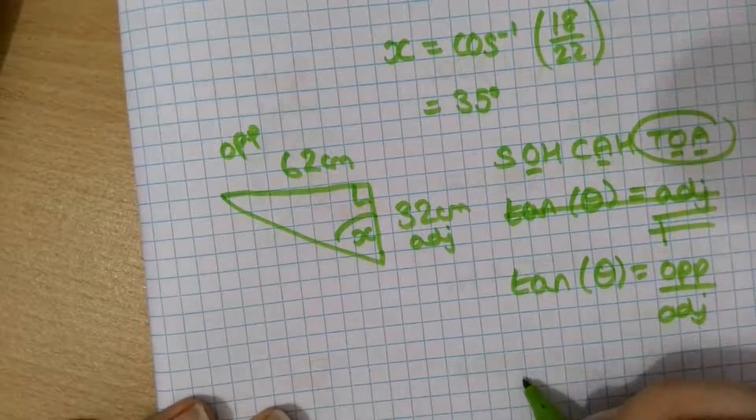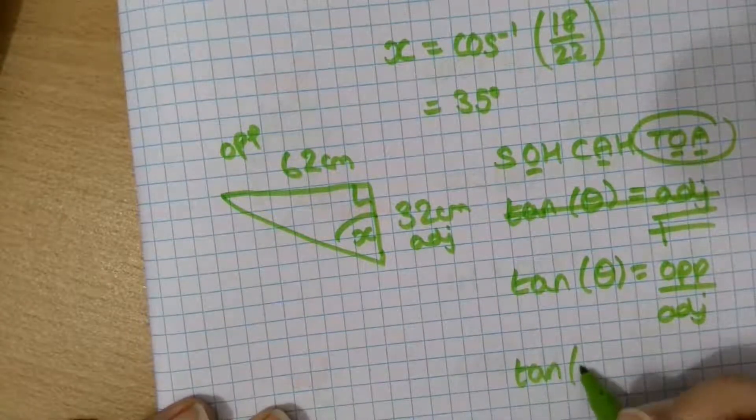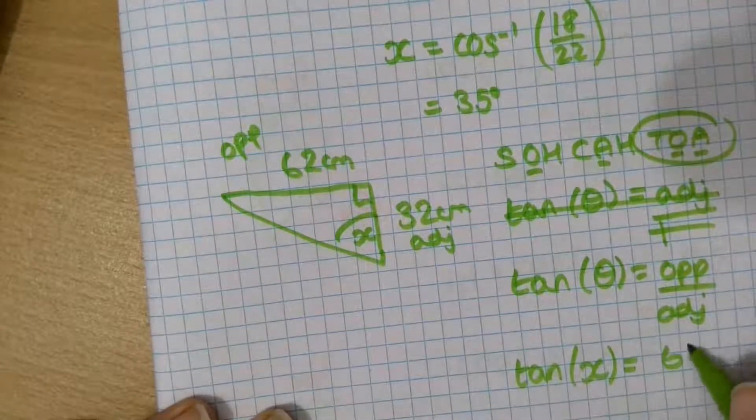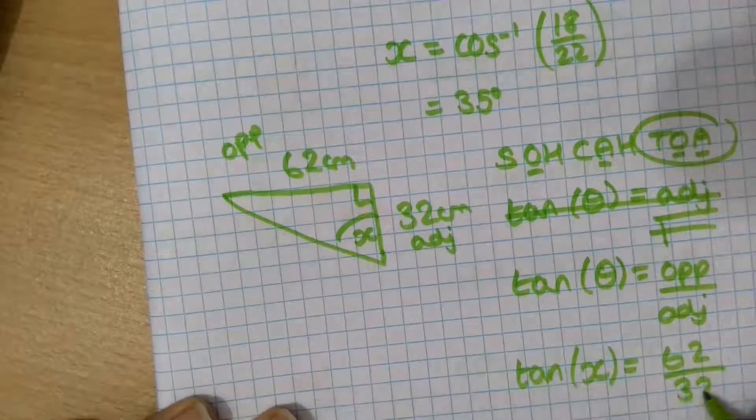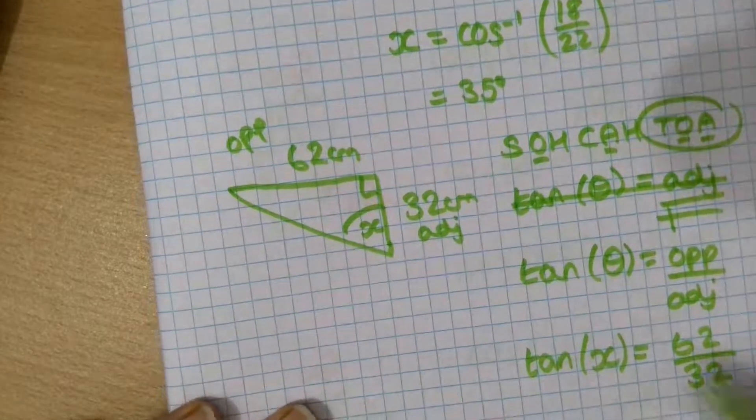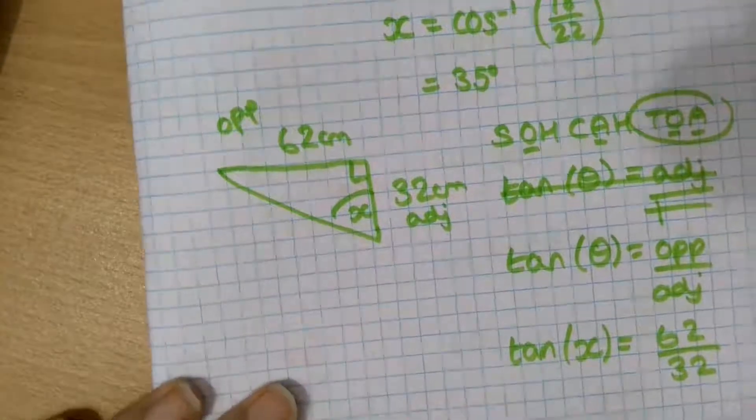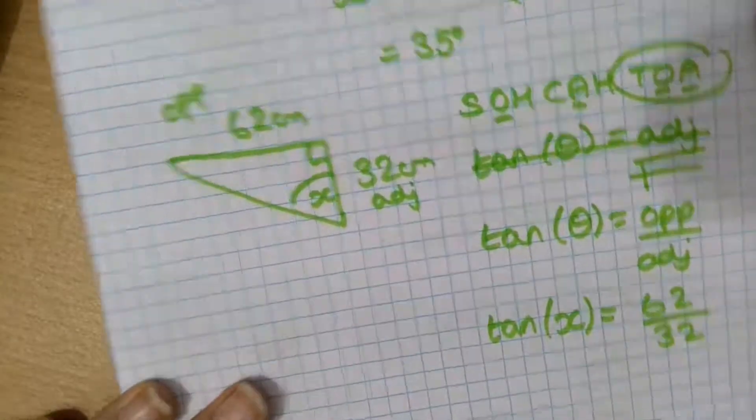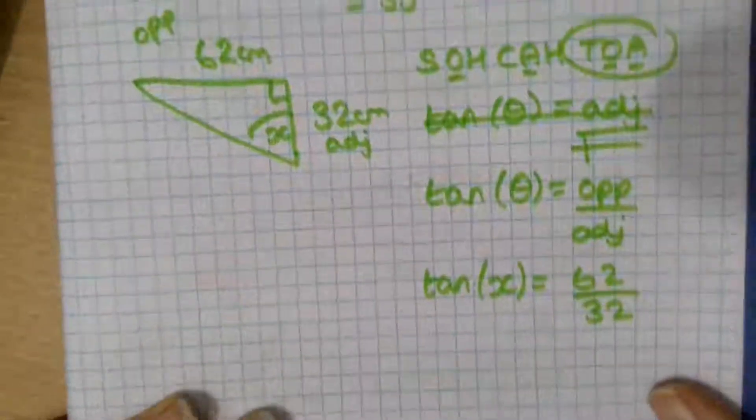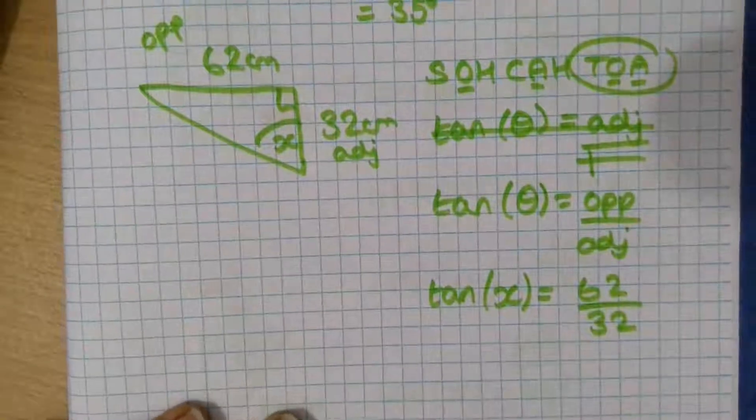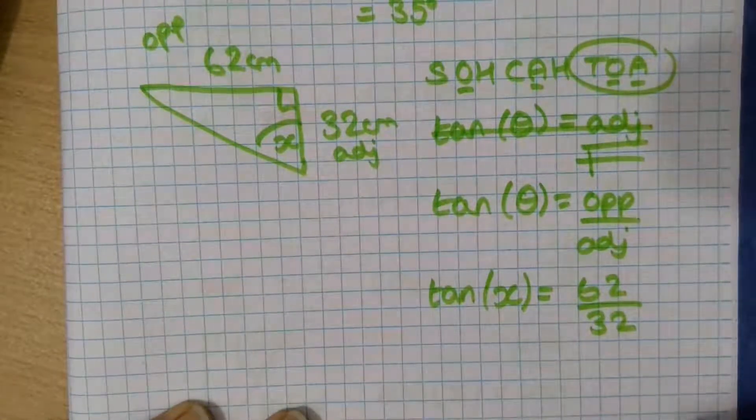So, let's put the numbers in. Tan x equals the opposite side, which is 62, over the adjacent side, which is 32. Now, with a tan triangle, it doesn't matter whether the top or the bottom is larger, whether the numerator or the denominator is larger. So, with a tan triangle, it might not give you math error, but it might still be wrong.